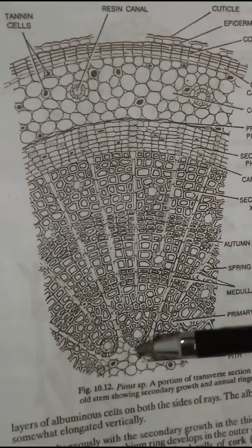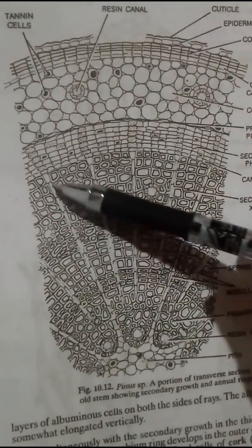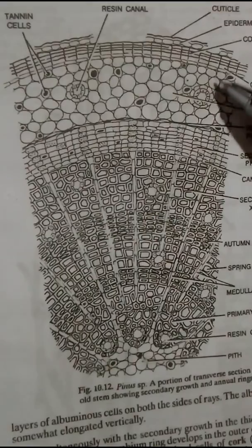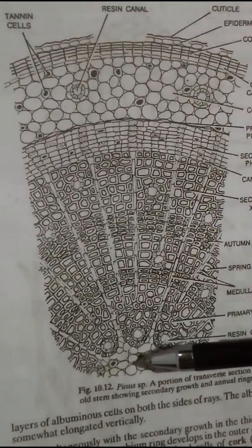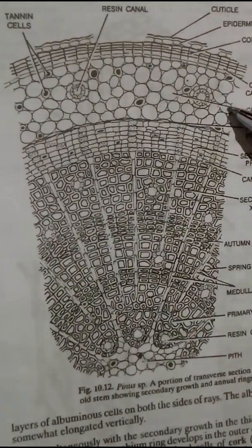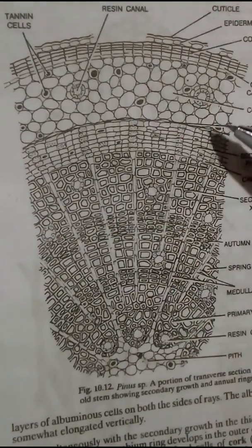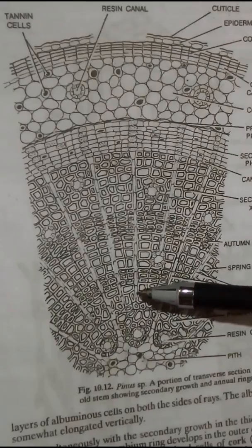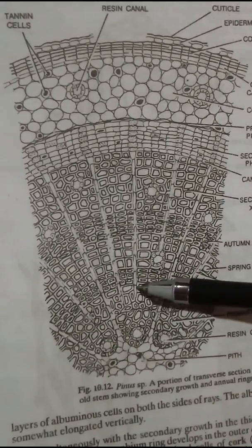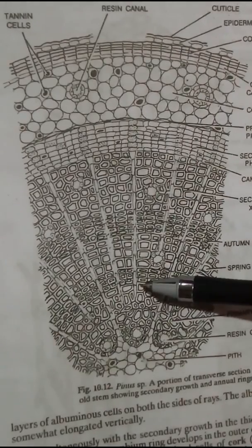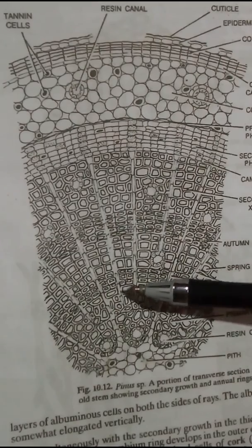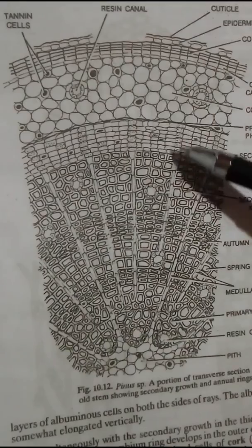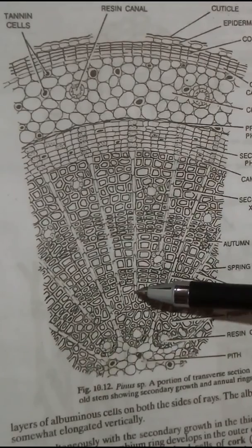The primary medullary rays connect the cortex — they run from the pith to the cortex. The secondary rays, as seen in this figure, traverse the secondary xylem and the secondary phloem.